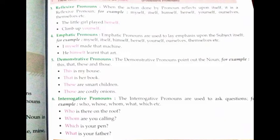Emphatic pronouns कहाँ use होते हैं: जब हम किसी की बात करें और उस पर ही जोर डालें। For example: 'I myself made that medicine' — मैंने खुद ही दवाई बनाई। यहाँ 'myself' subject 'I' पर जोर डाल रहा है, इसलिए यह emphatic pronoun है। दूसरी example: 'He himself learned that art' — उसने खुद ही वह कला सीखी।